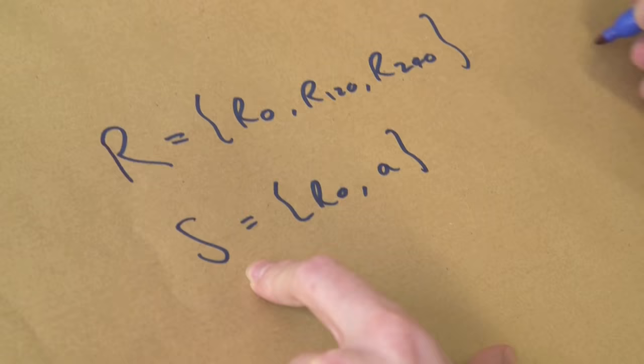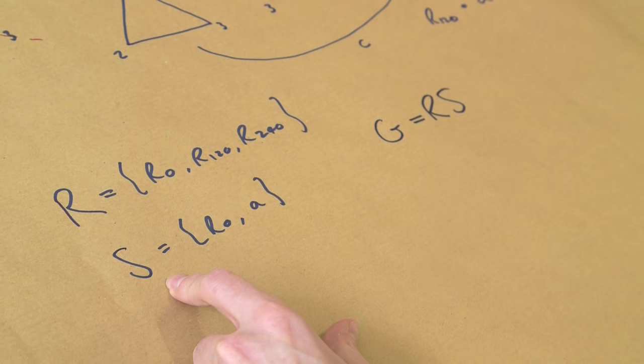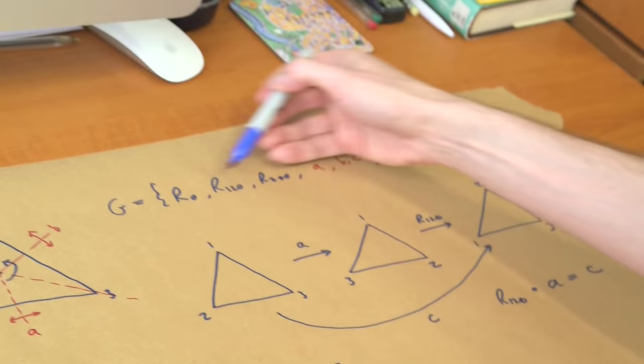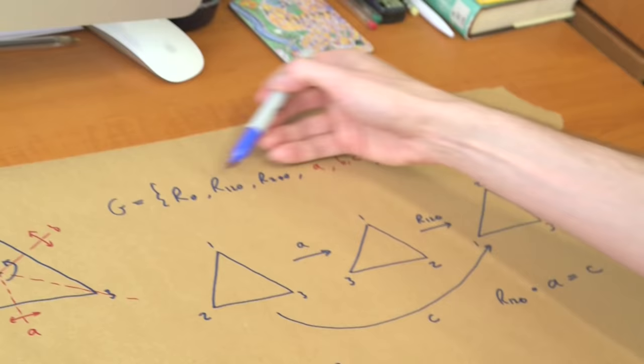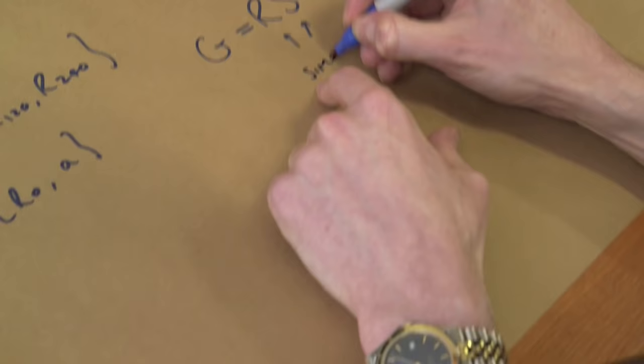It's not too hard to see that we actually can write G as R times S as a sort of a factorization. What this means is, what I've written down here is that every element of this symmetry group, G, is a product of something in R with something in S. So that's why we might say that this is a factorization of G into two smaller pieces.